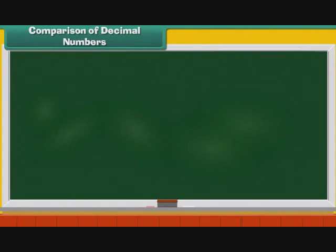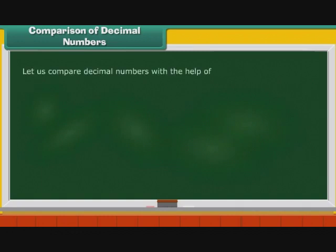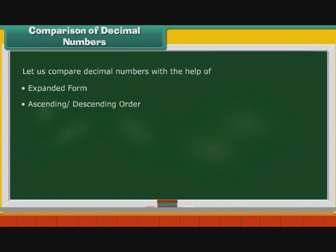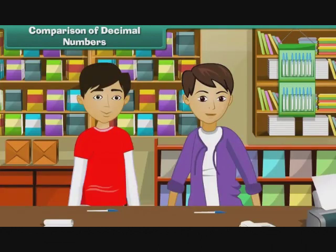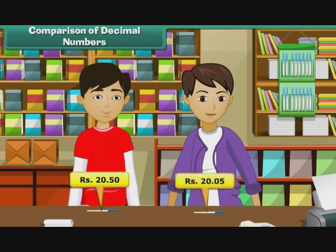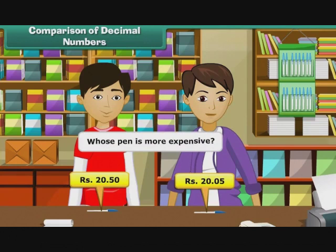Comparison of Decimal Numbers. To understand decimals better, we now compare decimal numbers with the help of expanded form. Let us look at some examples. Karan bought a pen for rupees 20.50 while Ravi bought a pen for rupees 20.05. Whose pen is more expensive?